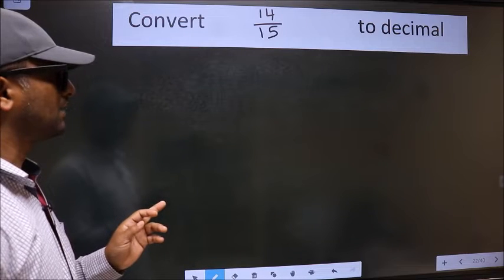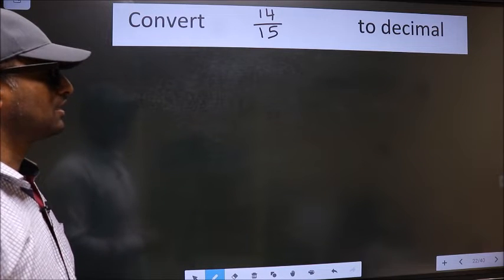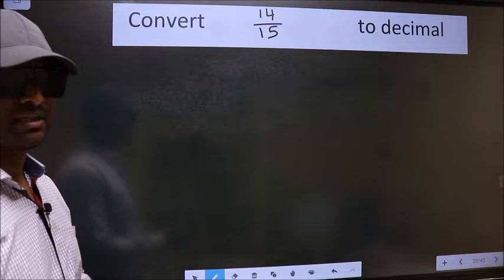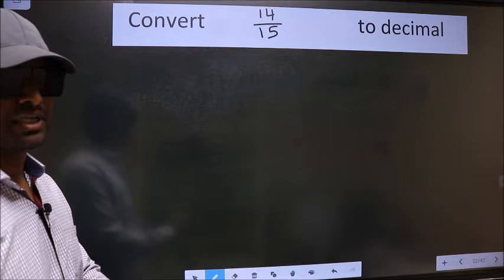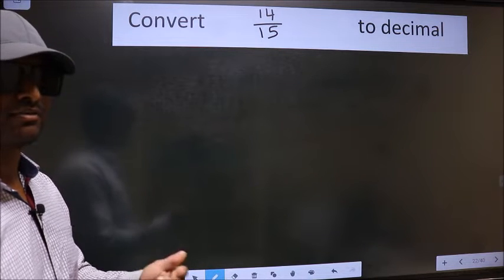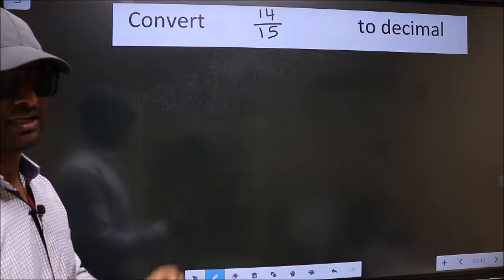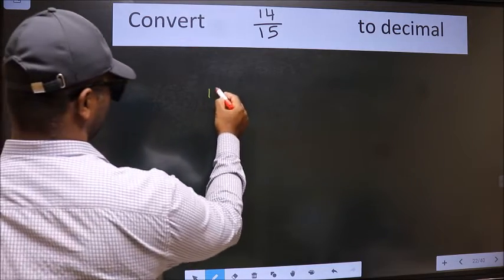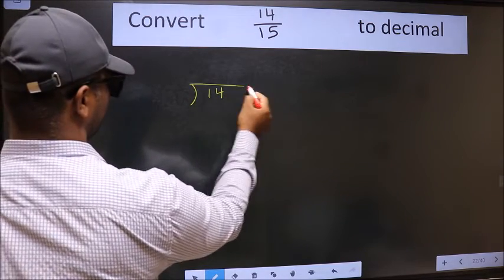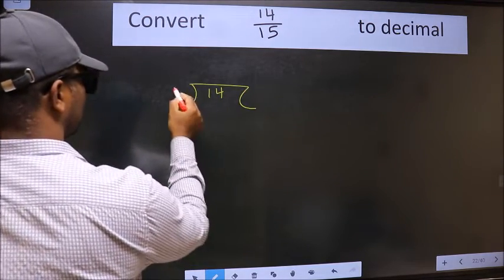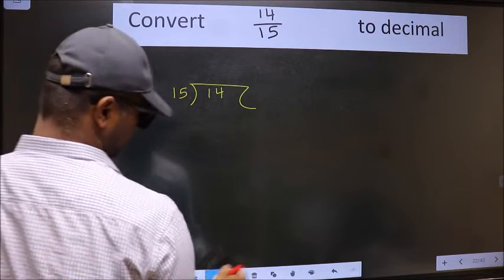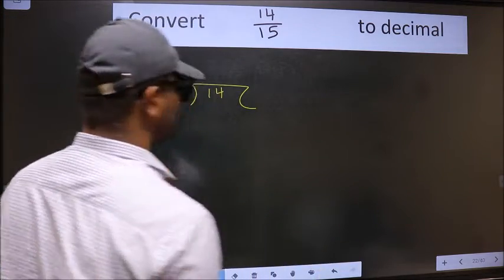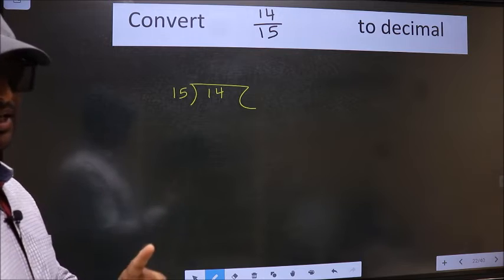Convert 14 by 15 to decimal. To convert to decimal we have to divide, and to divide we should frame it in this way: 14 here and 15 here. This is your step 1.